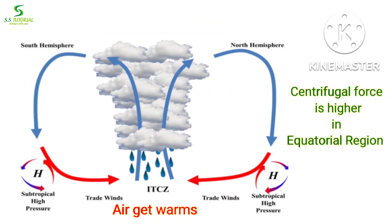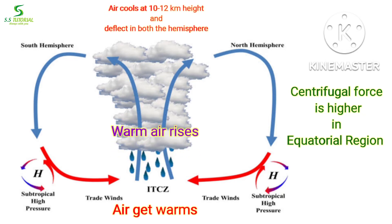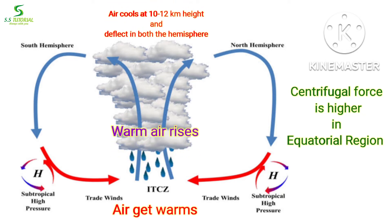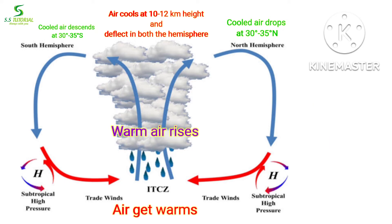In this region centrifugal force remains higher due to the rotation of the earth. Air which warms up in the equatorial region near the earth's surface rises, and that air cools after reaching 10 to 12 km height and tries to descend straight. But due to centrifugal force and vertical air currents, air cannot descend straight. As a result, air is deflected in both hemispheres and descends at 30 to 35 degree latitude in both hemispheres.